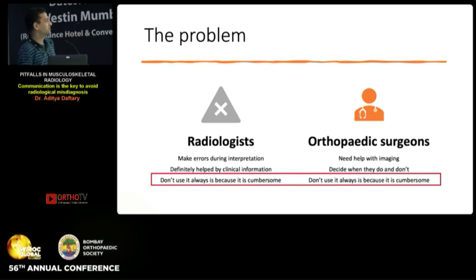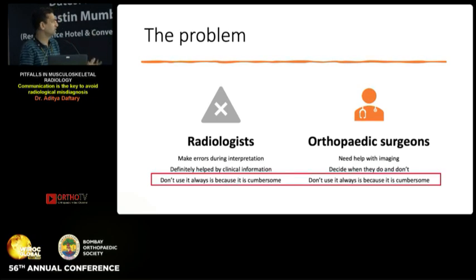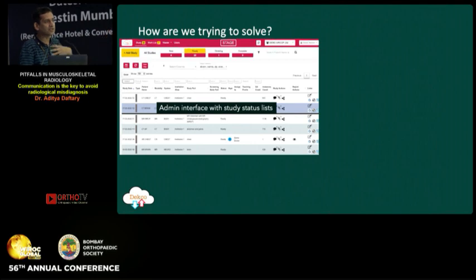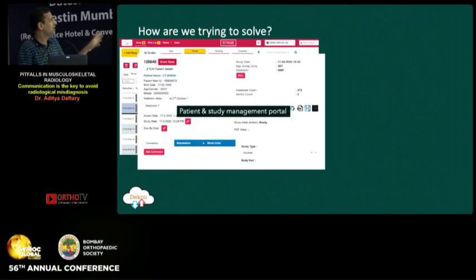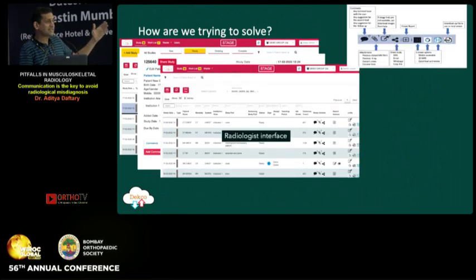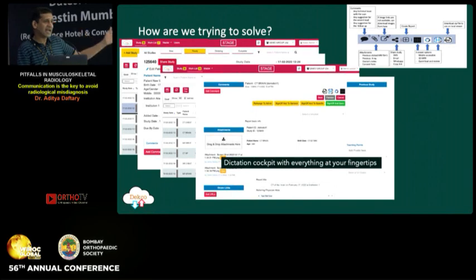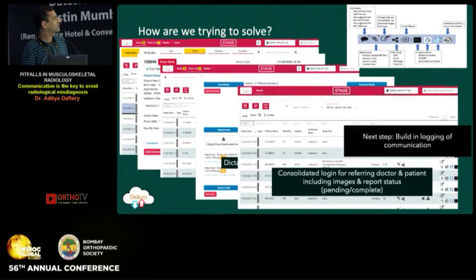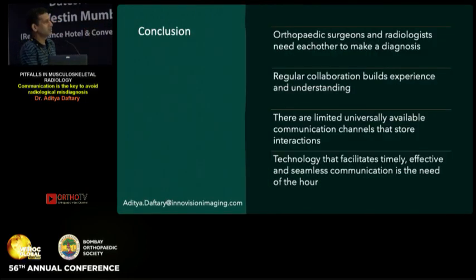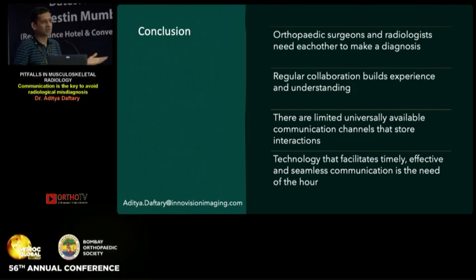The problem I'm demonstrating is that yes, radiologists make interpretations and can be helped with clinical information; similarly, orthopedic surgeons need help with imaging but decide when they want it. The reason we're not using each other well is because it's cumbersome — we don't have convenient methods. What we've done is create a software solution that gives all available information at our fingertips when looking at scans, allows combining patients to see old and current studies, and gives radiologists convenience while reporting and orthopedic surgeons easy access. The bottom line is we need each other, we need collaboration that builds experience, but we have very few communication tools that allow this regularly. Technology that facilitates this is the key to solving this problem long term.